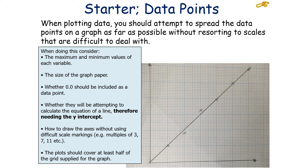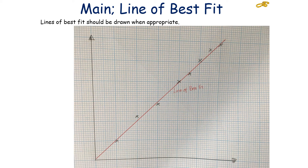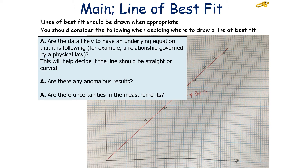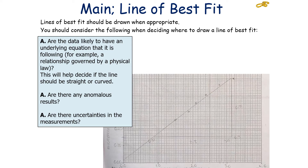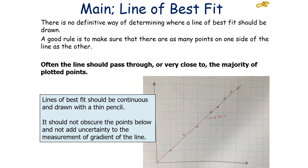A line of best fit should be drawn where appropriate. When deciding whether to draw one, consider whether the data likely follows a physical law — which helps decide if the graph should be straight or curved — and whether there are any anomalous results or uncertainties in the measurements. There is no definite way of determining where a line of best fit should be drawn. A good rule is to make sure there are as many points on one side of the line as the other, and the line should pass through, or be very close to, the majority of the plotted points. Lines of best fit should be drawn continuously with a thin pencil so they don't obscure the points or add uncertainty to gradient measurement.